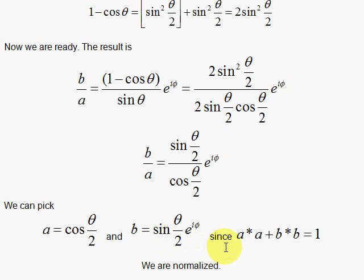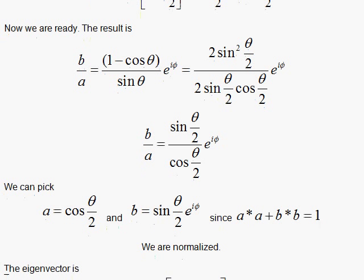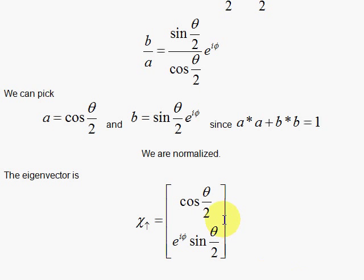We're finished because the normalization condition — A star A plus B star B — already gives us 1. A is real, so A star A is cosine squared theta over 2. When we take B star B, the B star gives e to the minus i phi, which cancels the e to the plus i phi, leaving just sine squared theta over 2. Cosine squared plus sine squared equals 1, so we are normalized. There's the eigenvector.